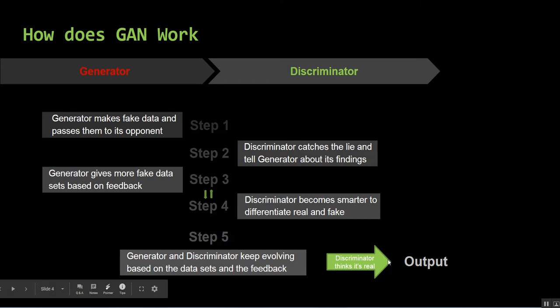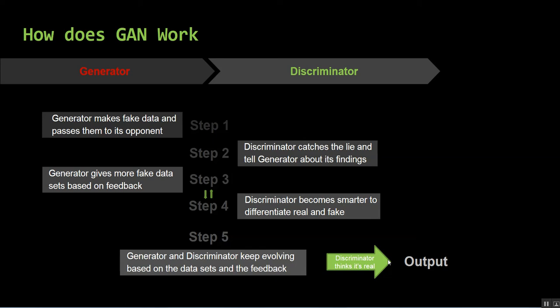To further understand the model, let's assume that you only provide images of cats to the model. Now you give one image from the training set and one image of a dog. It should output 0 if it gets fed a generated image and it should output 1 if it gets fed a real image.